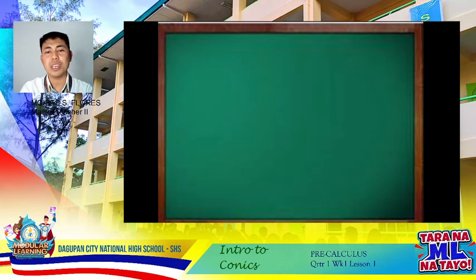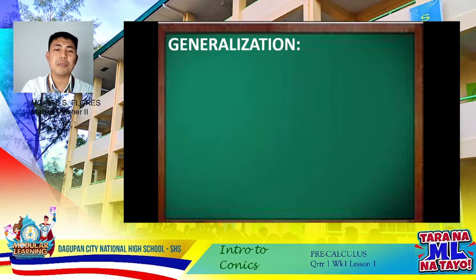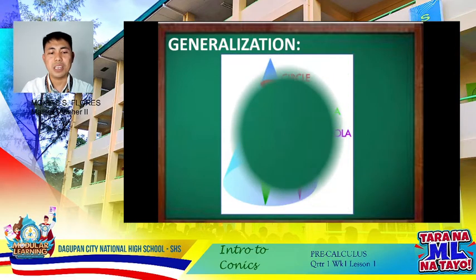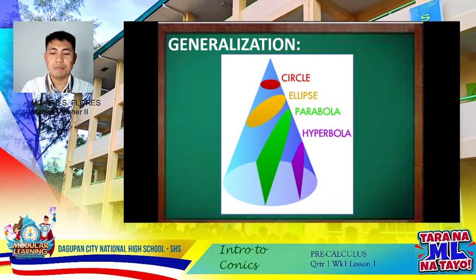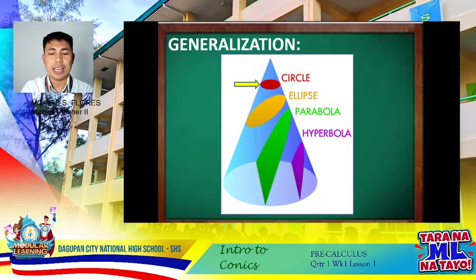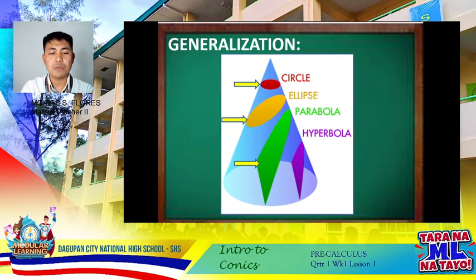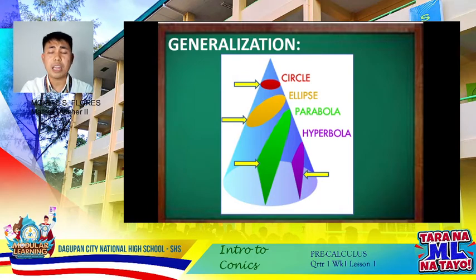There we have our four types of conics. Let us generalize what we discussed today. A circle was formed when the plane is horizontal. An ellipse was formed when the tilted plane intersects only one cone to form a bounded curve. A parabola forms when the plane intersects only one cone to form an unbounded curve. And lastly, a hyperbola was formed when the plane, not necessarily vertical, intersects both cones to form two unbounded curves.